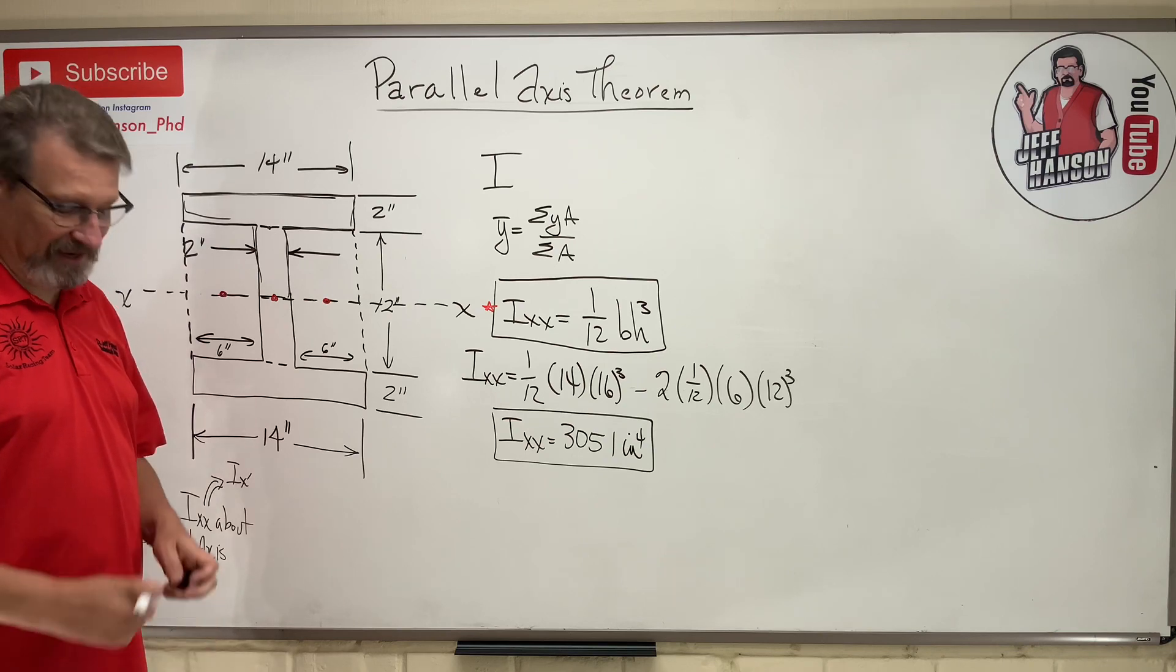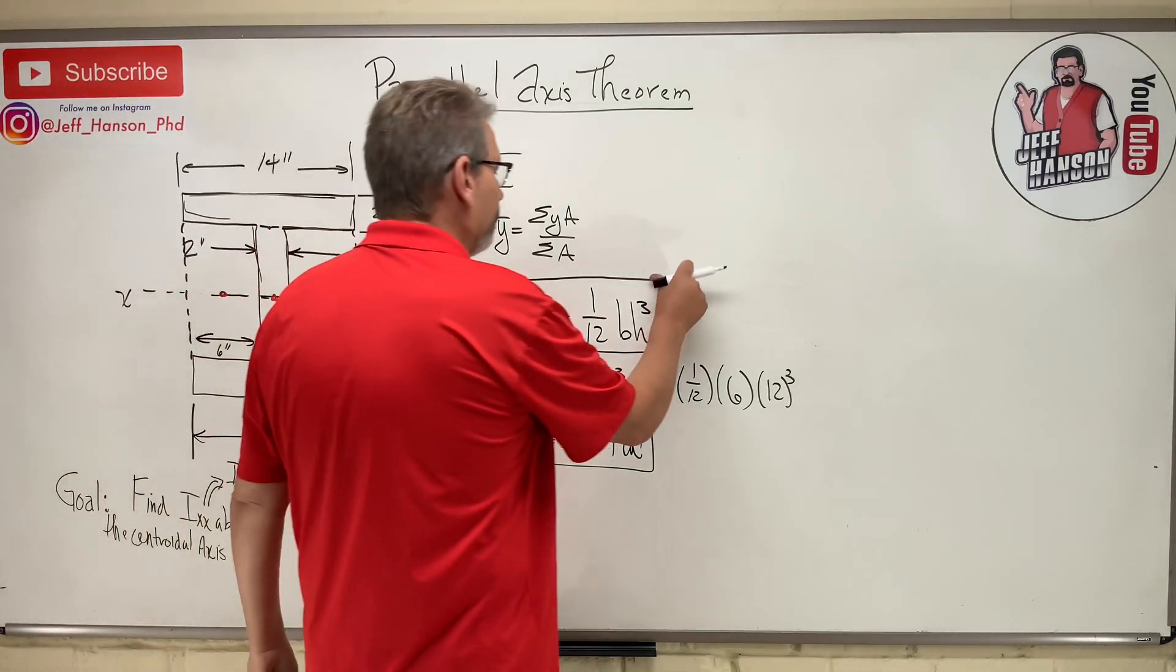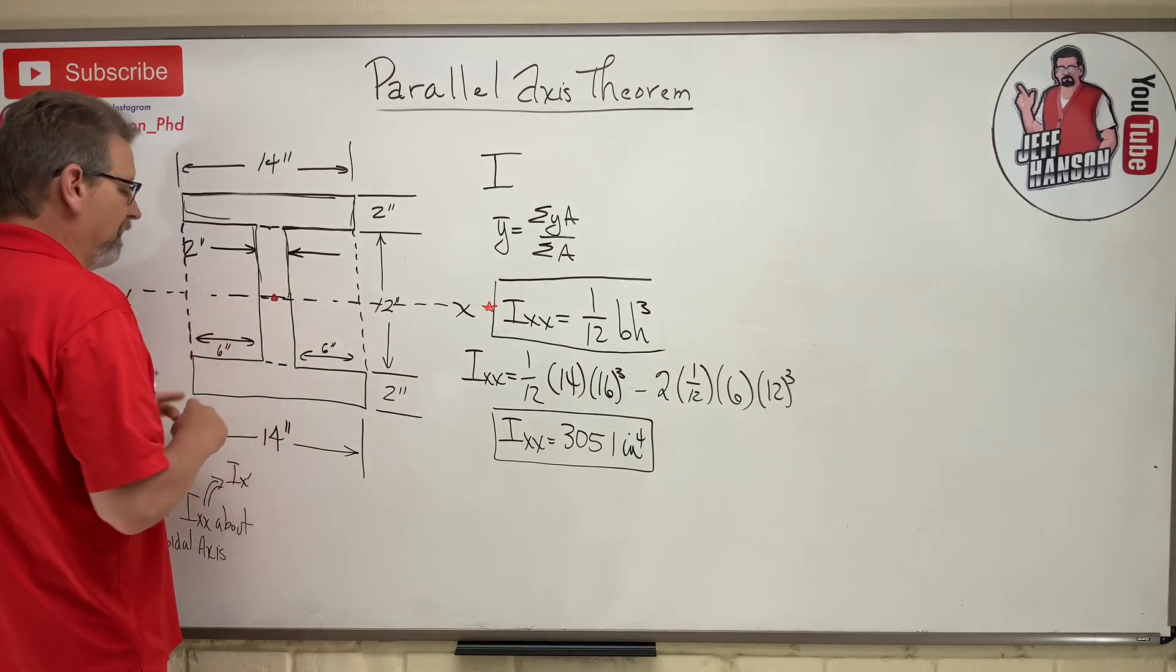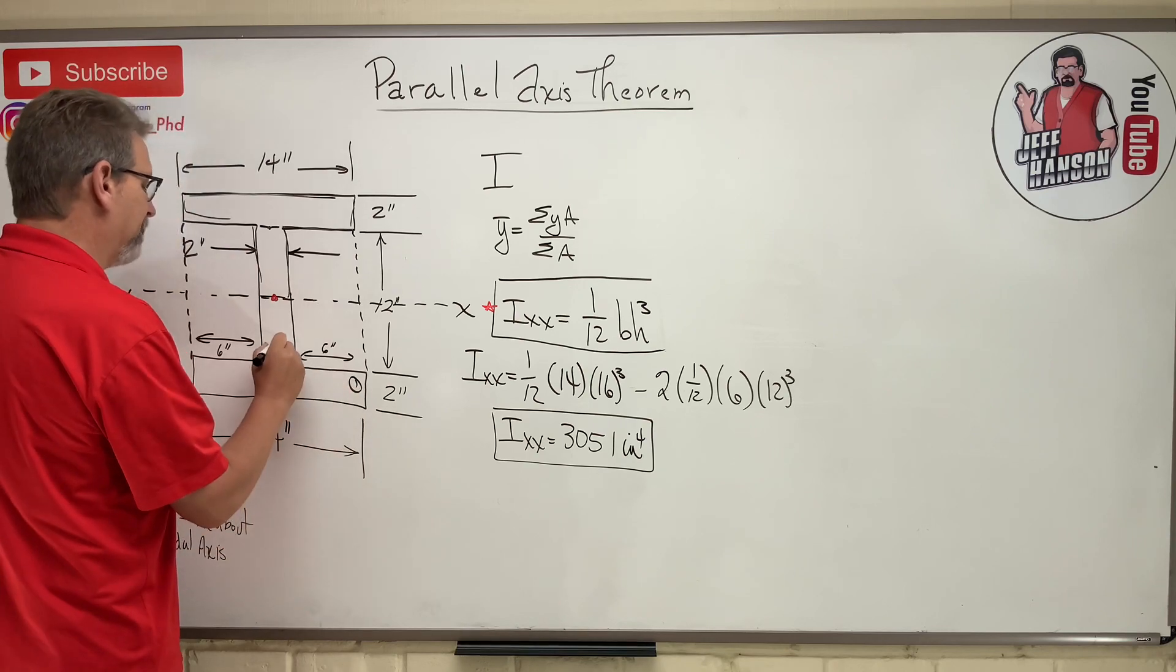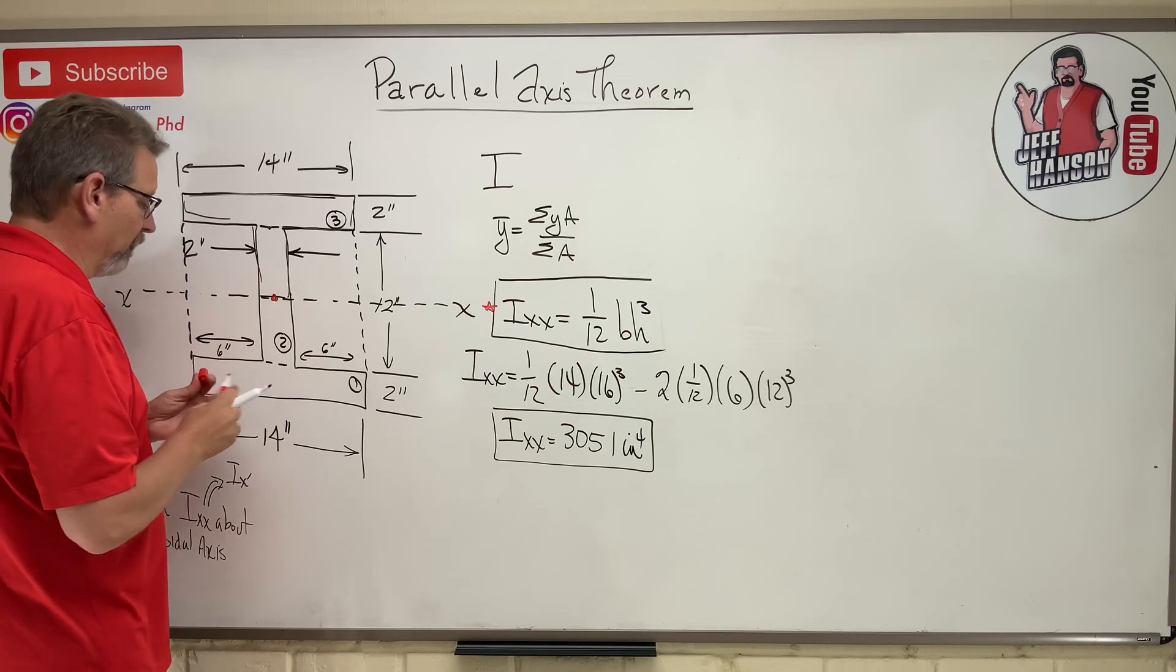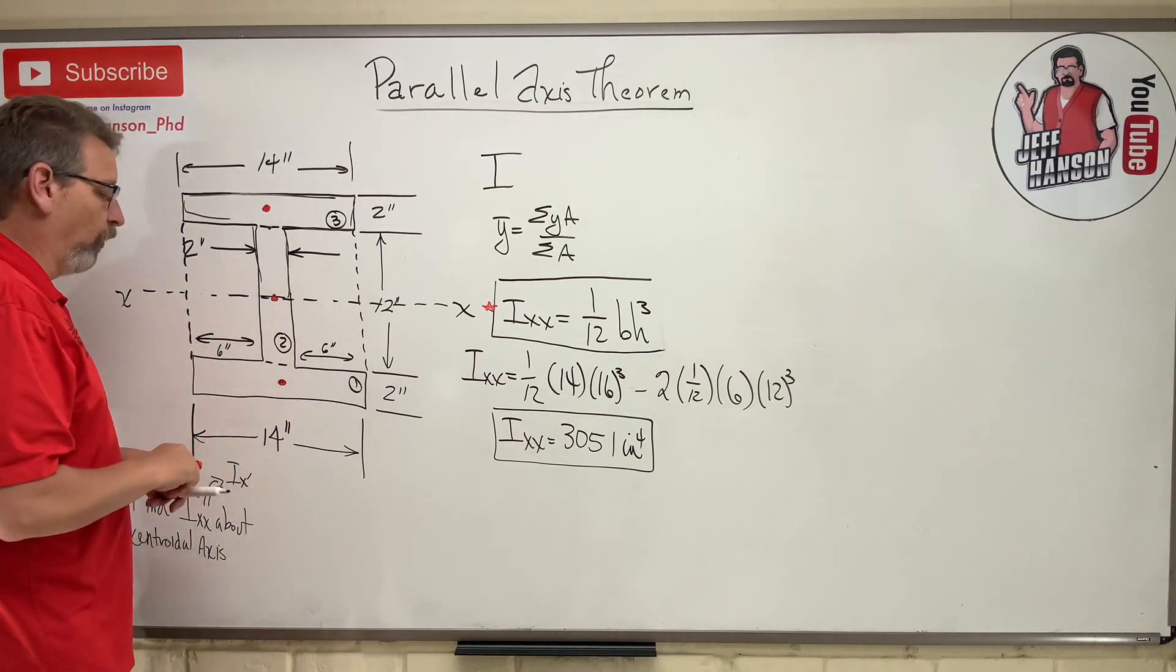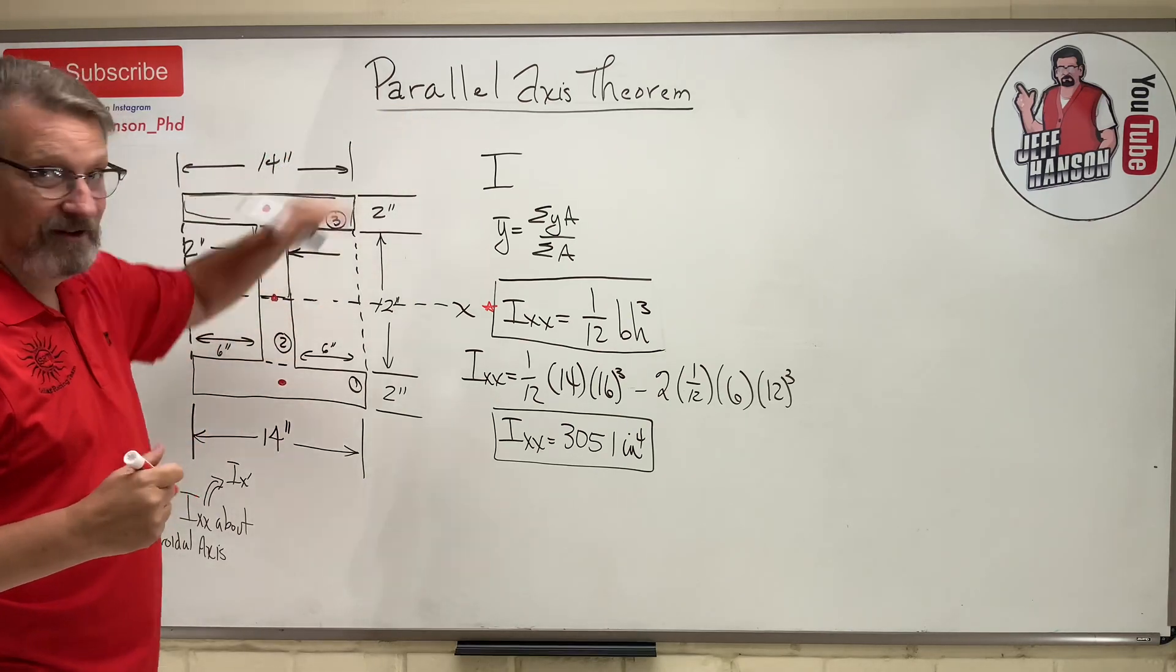Otherwise, every single time, and it works for that case too, you have to use the parallel axis theorem, and here it is. Here's the parallel axis theorem. It is a transform. It is a transform, because what originally most of you probably were thinking about doing, instead of using the shapes that I use, you're probably thinking, hey, let's use these other two pieces. Let's make this piece one, this piece two, and this piece three up here. So where would the centroid of those parts be? Well, this one would be right there, and this one would be up here, and then piece two is actually on the neutral axis.